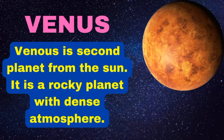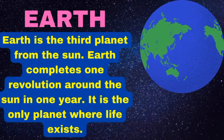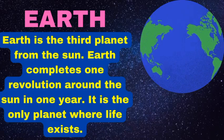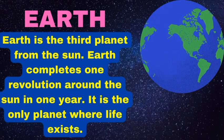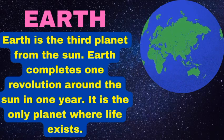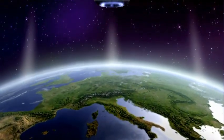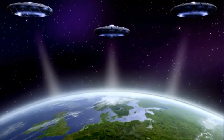Earth is the third planet from the sun. Earth completes one revolution around the sun in one year. It is the only planet where life exists. Our Earth contains 71 percent water and only 29 percent is land. Out of this, only 3 percent is fresh water.